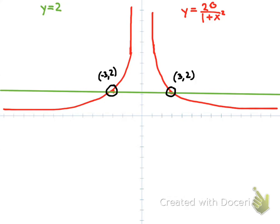set the two equations equal to each other. So you would have 20 over 1 plus x squared equals 2. And then, after doing some math, you'll get x equals plus or minus 3.